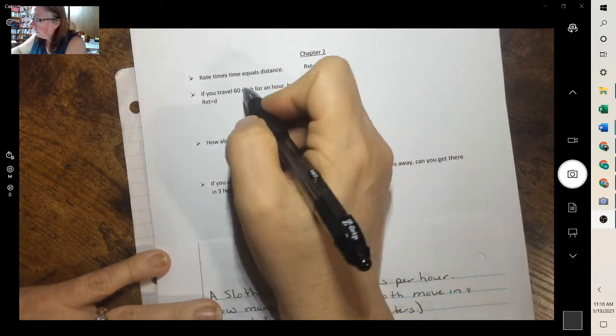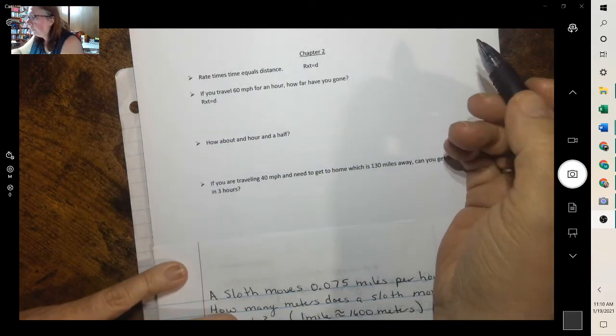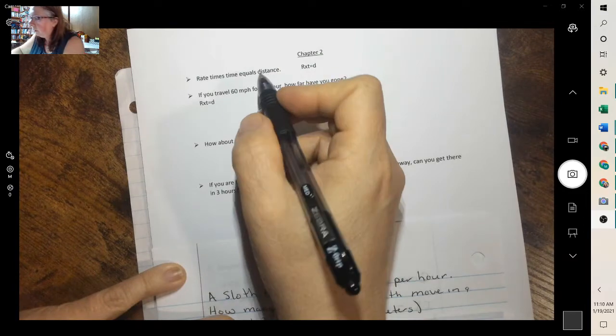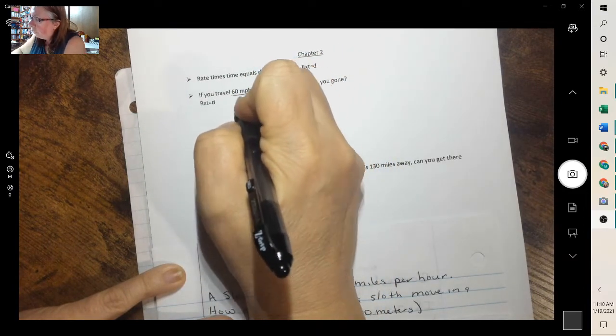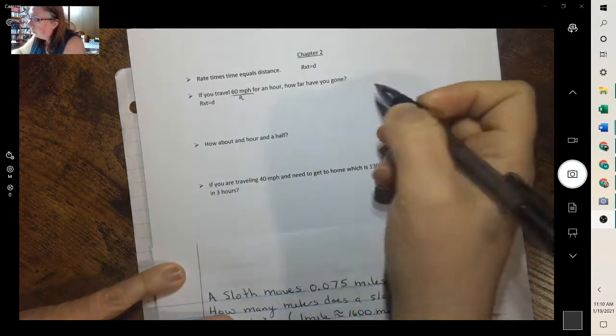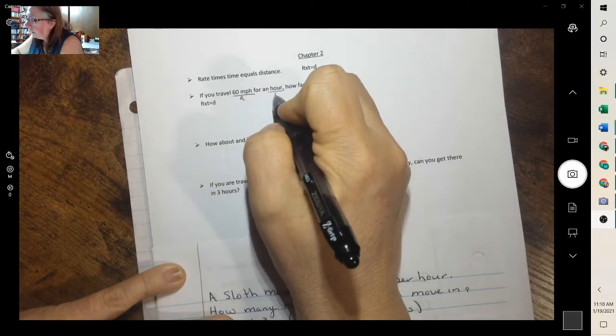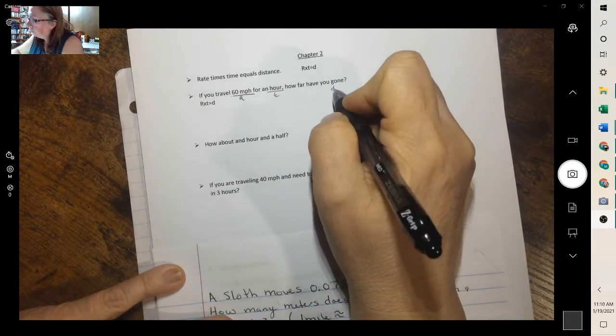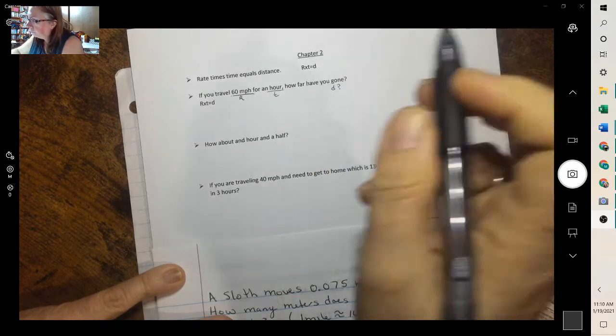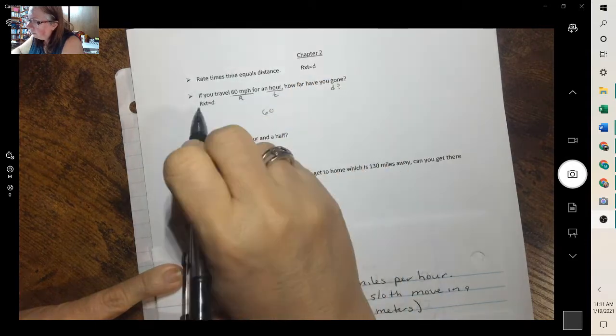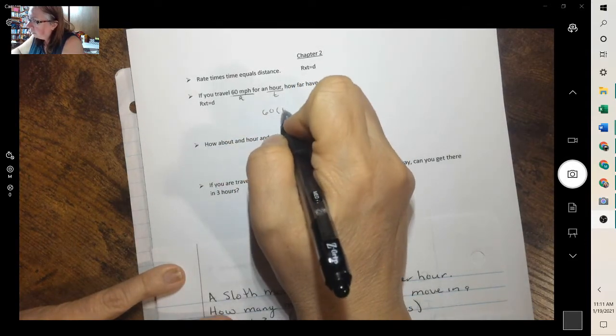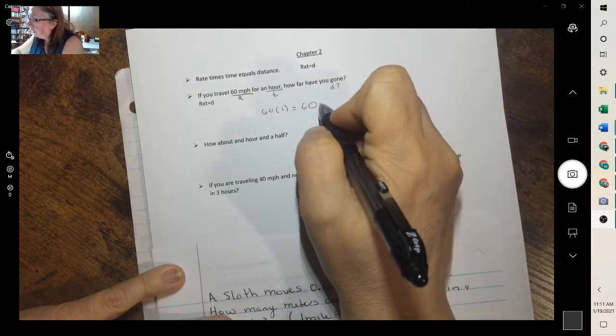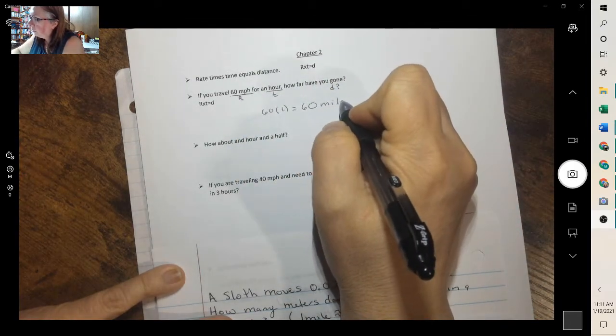So if we're looking at this problem, if you travel 60 miles per hour for an hour, how far have you gone? We're using rate times time equals distance. This is a rate, miles per hour. Hour is time, and we're looking for distance. So we take 60 because that's our R, times our time, and that will give us our distance. So we went 60 miles.